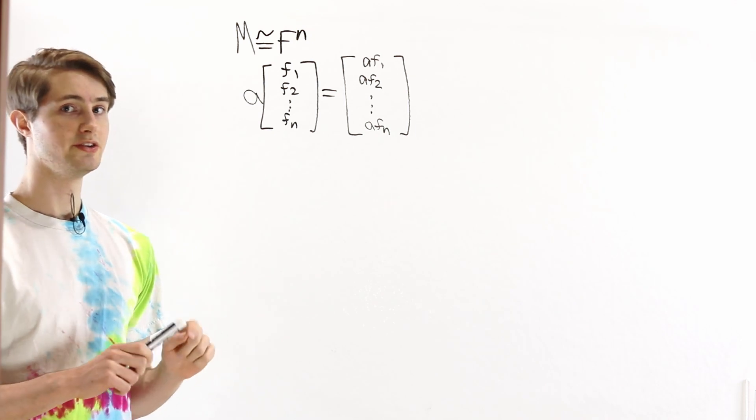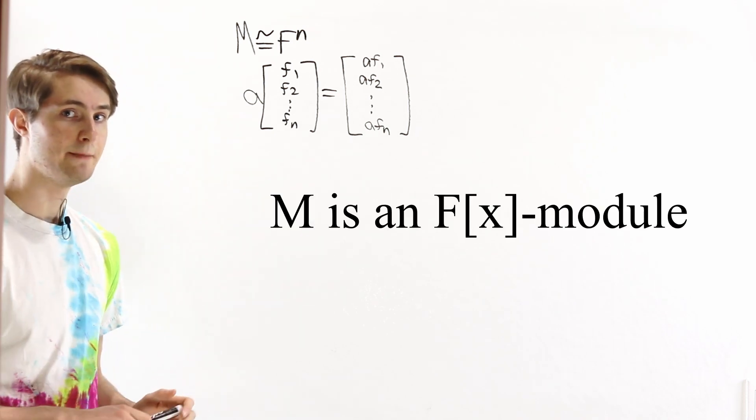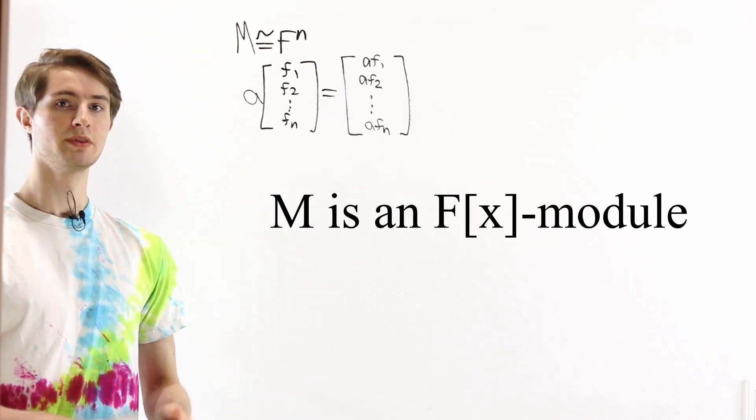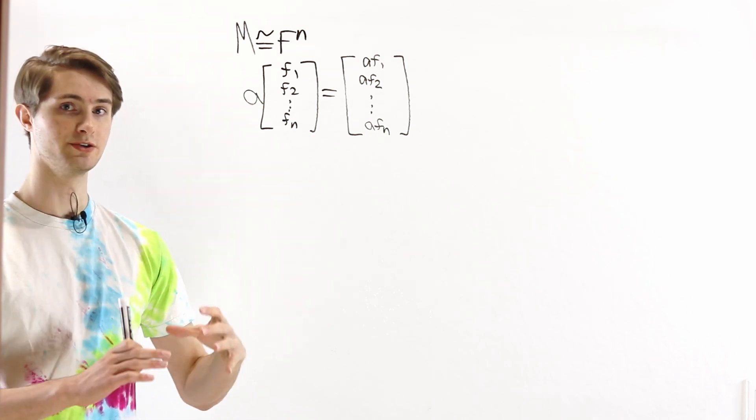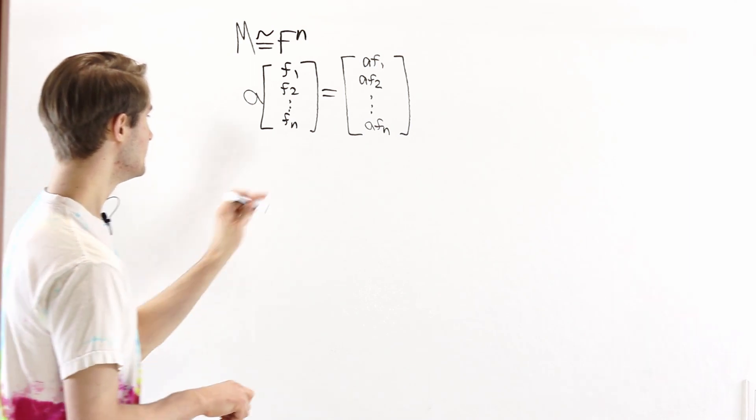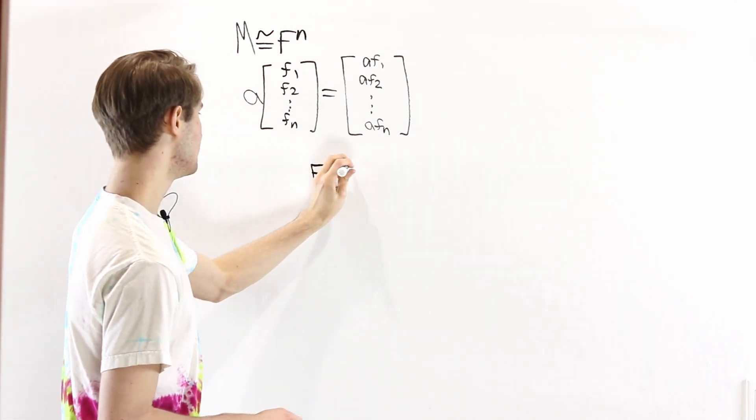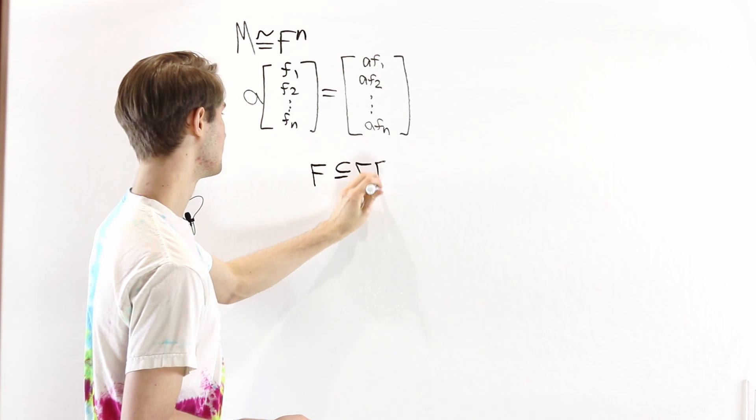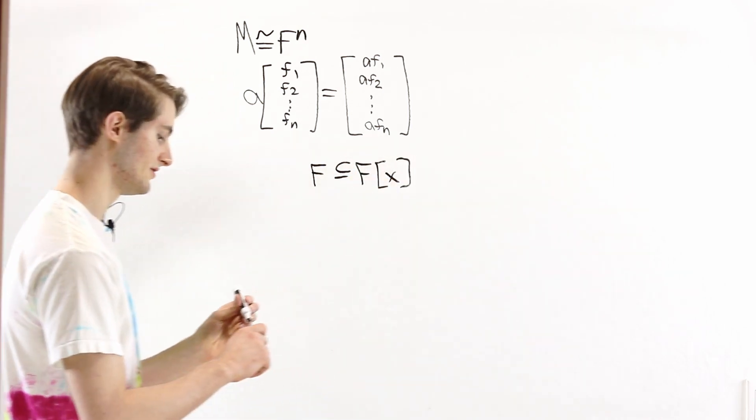Now let's suppose that instead of being an F module, M is an FX module. So it's a module over the ring of polynomials with coefficients in the field F. Now we know that F, this field, is a sub-ring of the ring of polynomials FX.